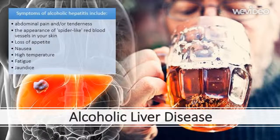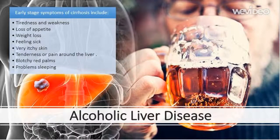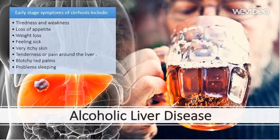Cirrhosis symptoms come in two stages. Early stage symptoms — caused when your liver starts to lose some function — include tiredness and weakness, loss of appetite, weight loss, feeling sick, very itchy skin, and tenderness or pain around the liver area in your abdomen.